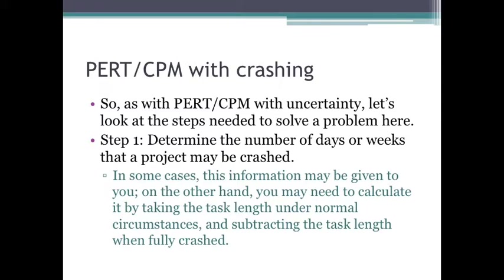Step one: the first thing to do is to determine the number of days or weeks that a project can be crashed. It may be given to you — you may be told this is the number of weeks that a particular task can be crashed. On the other hand, if you're given the task length normally, without crashing, and you're given the task length when fully crashed, then you'll have to calculate it. The number of crash weeks is just the normal task length minus the crashed task length.